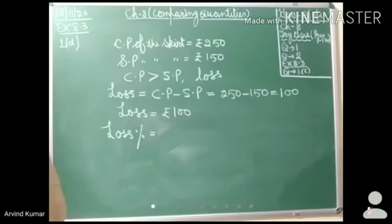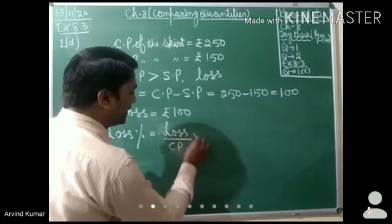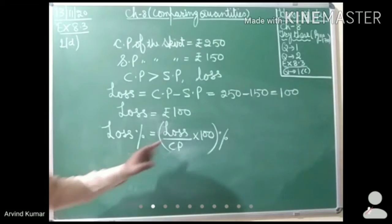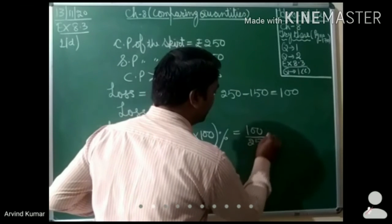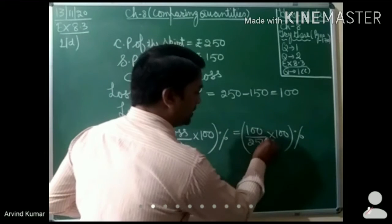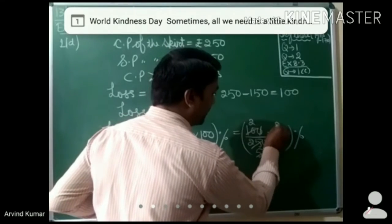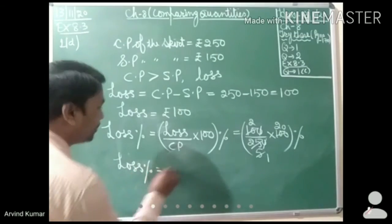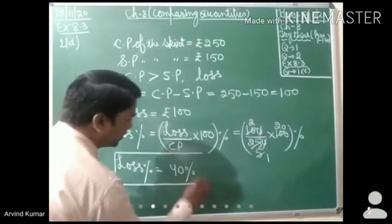We also have to find the loss percent. Loss percent = loss over CP multiplied by 100 = 100 over 250 multiplied by 100. On simplifying, the zeros cancel and we get 2 × 20 = 40 percent. Therefore, loss percent is equal to 40 percent. This is the required answer.